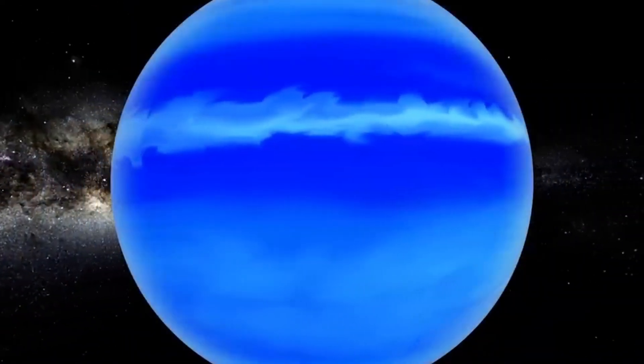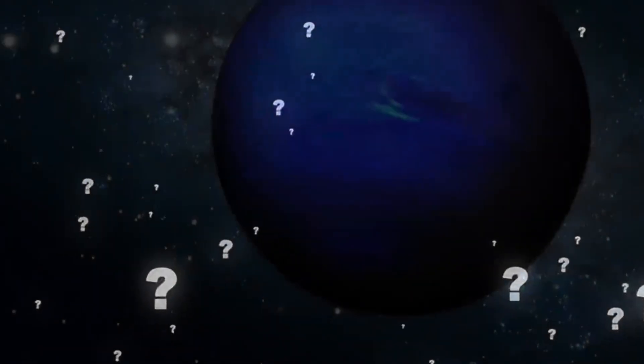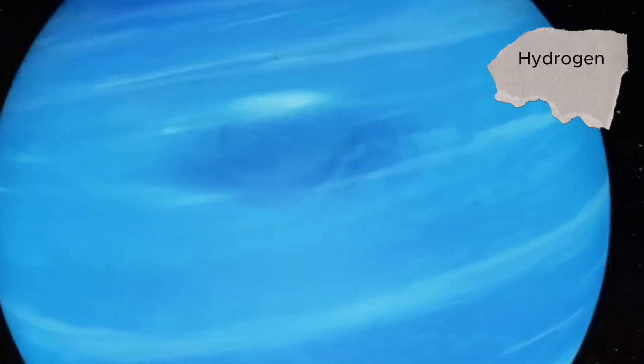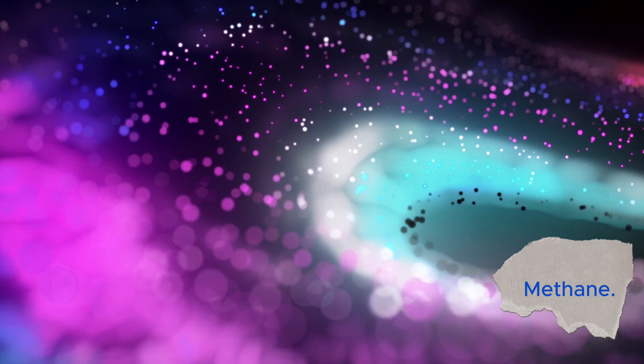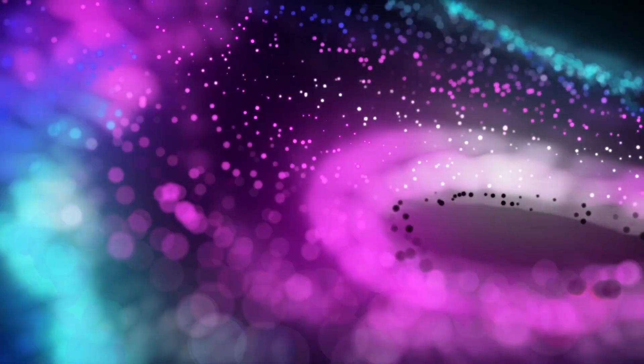Neptune's captivating blue hue has always mystified astronomers, but did you know that this color comes from its atmosphere? It's mainly composed of hydrogen and helium with a hint of methane. Methane absorbs red light and reflects blue, painting Neptune in the shades of an alien ocean.